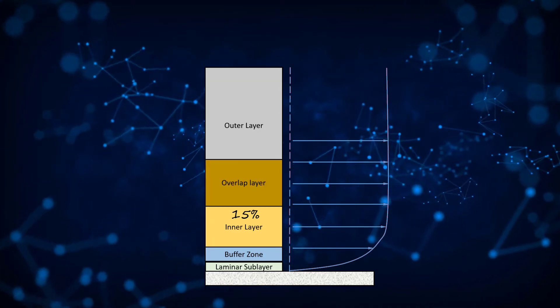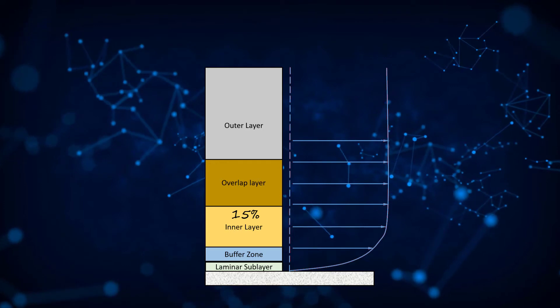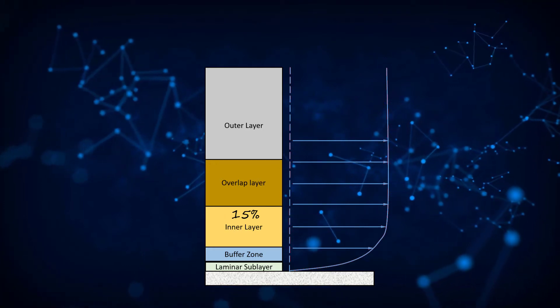The overlap layer is the transition region between the inner and outer layers, through which the effect of the wall slowly starts to fade away. In order to describe the flow in these different layers, Prandtl and Karman reasoned that in the inner layer, the free stream properties do not really impact the flow characteristics. Instead, the mean velocity in the boundary layer depends on properties such as wall shear stress, density, viscosity, and the wall-normal distance.